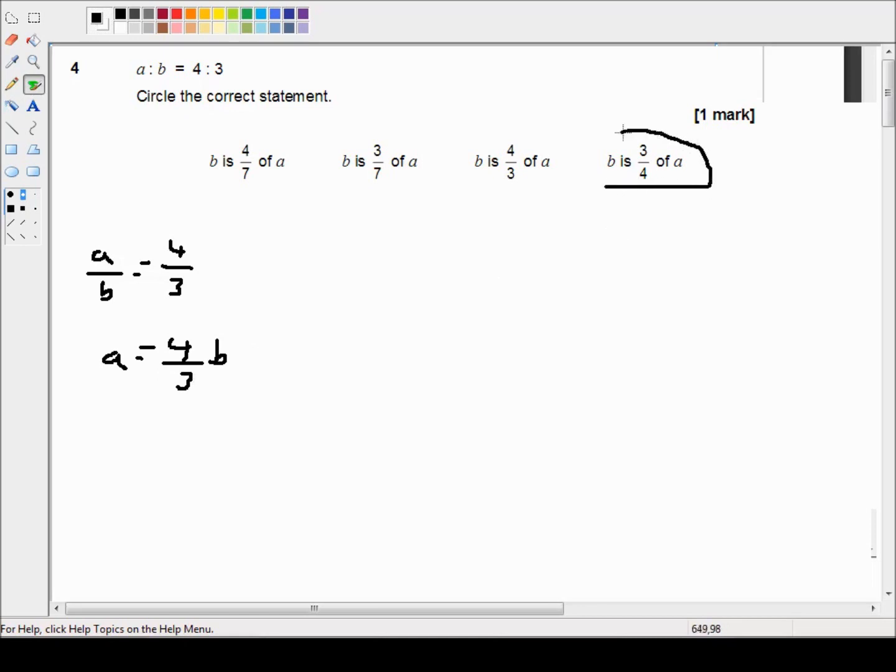If that's not clear let's multiply both sides by 3 and we'll say 3A is equal to 4B. And then if we divide both sides by 4 we can say 3 over 4A is equal to B. Which is B is 3 quarters of A.